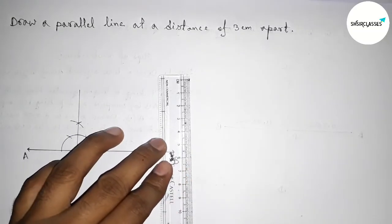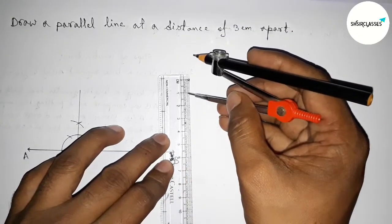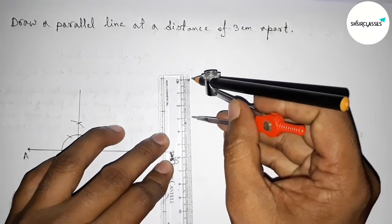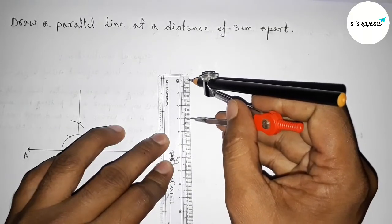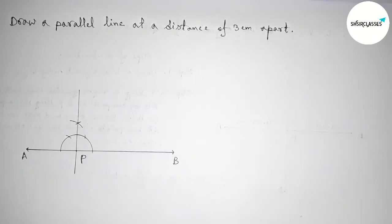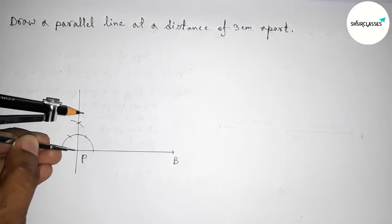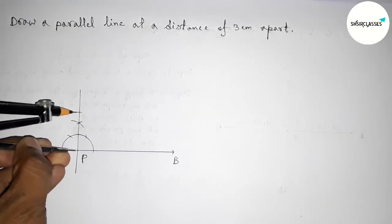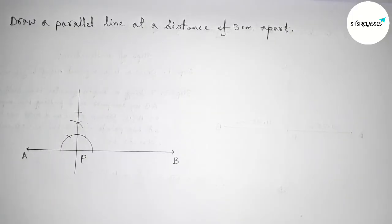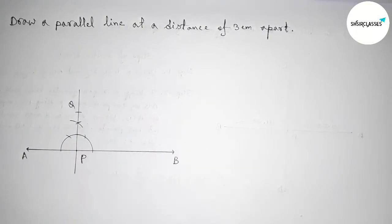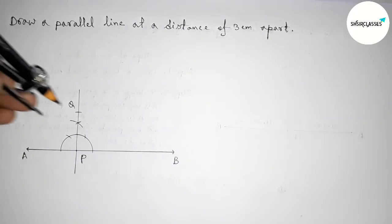Next, taking a 3-centimeter length with the help of scale and compass — that is 1, 2, 3 — this is 3-centimeter length. Putting the compass on the point P and marking here, so now taking this point as Q. So PQ equals 3 centimeters.